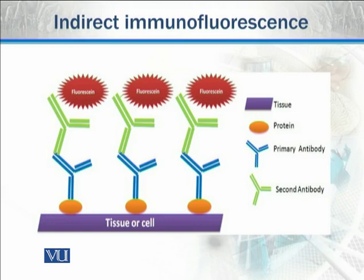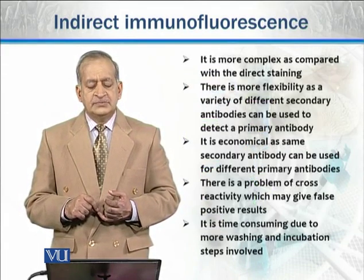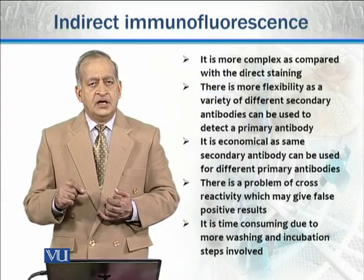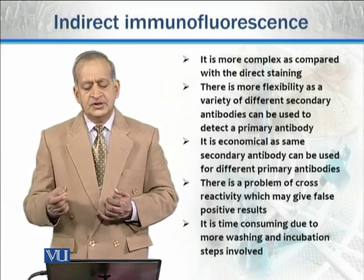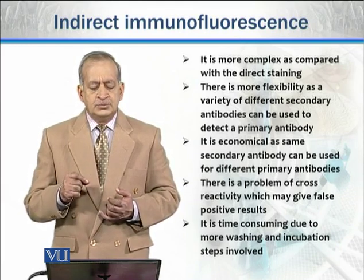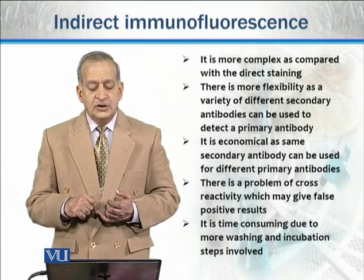The primary antibodies, which are blue in color, are unlabeled, while the secondary antibodies, which are green in color, are labeled with red fluorescein. Indirect immunofluorescence is more complex compared with direct staining, as there are more incubation steps and more washing involved.